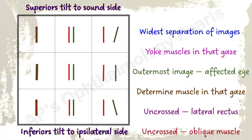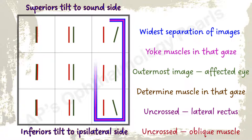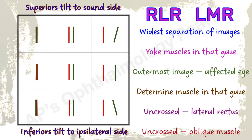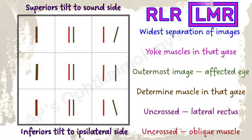Here, no vertical separation of images is seen. Maximal separation of images is in the right fields of gaze. The yoke muscles acting here are the right lateral rectus and the left medial rectus. Green is the outermost image, so the left eye is involved — there is a left medial rectus palsy. There is a crossed diplopia, so the medial rectus checks out.